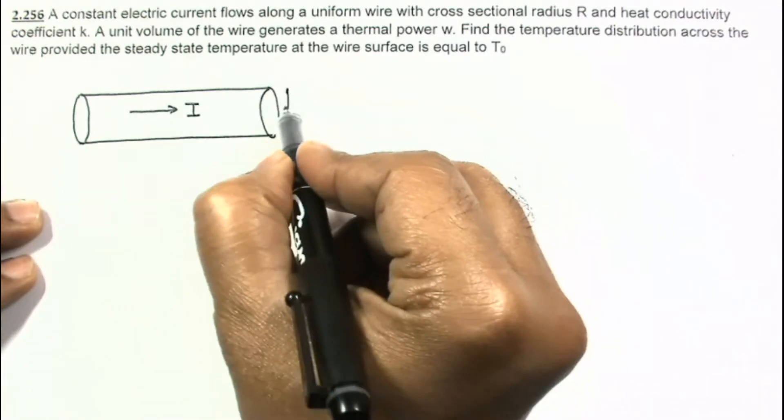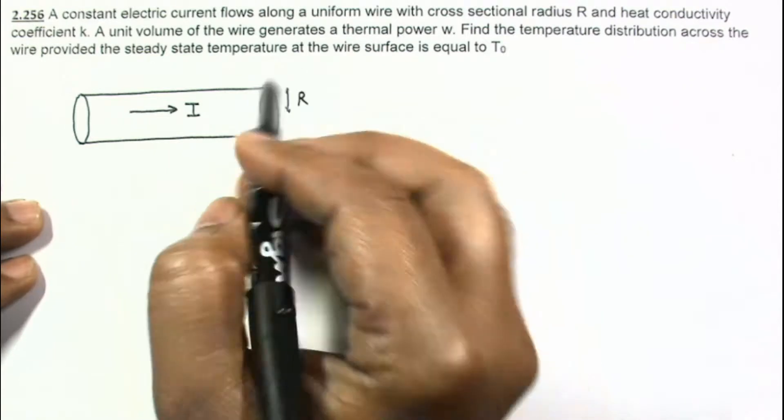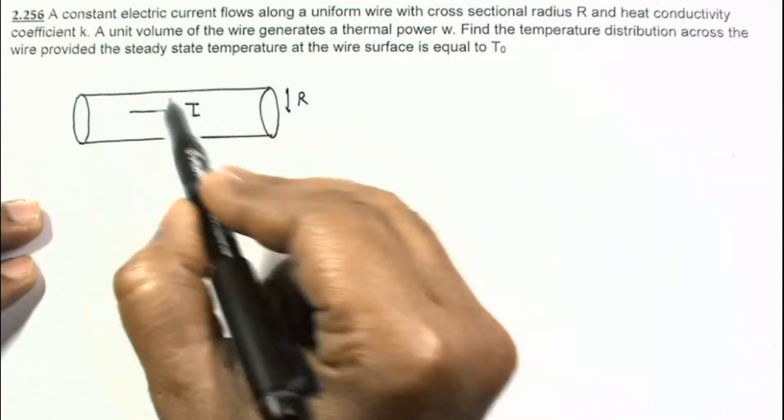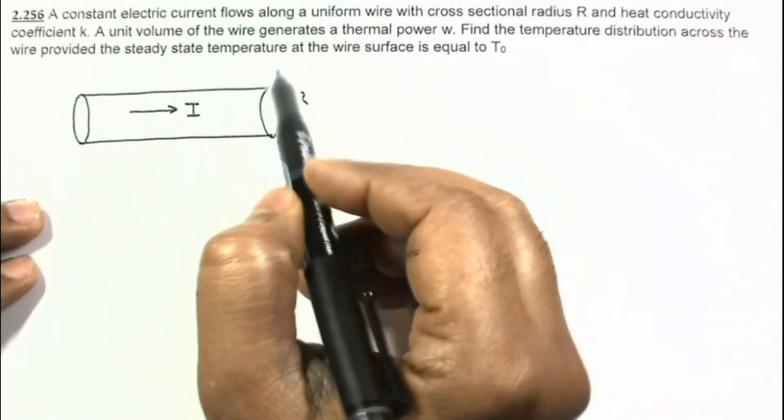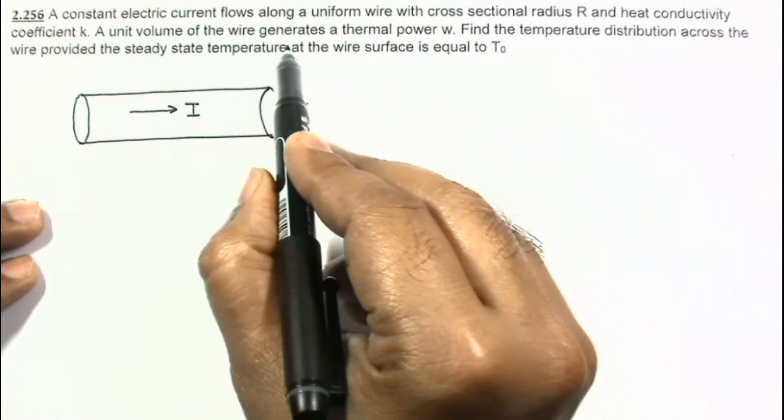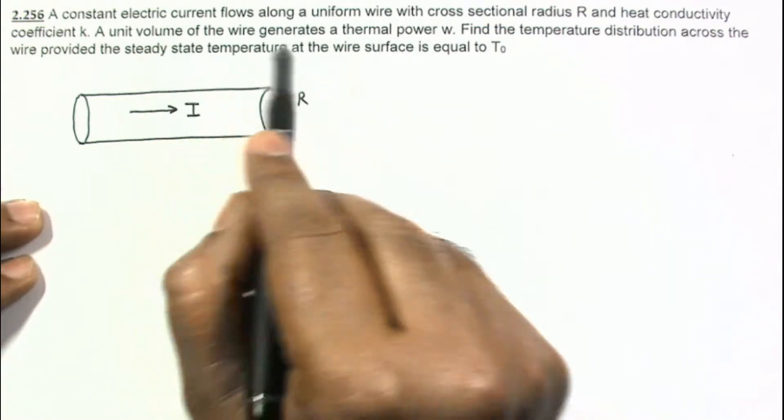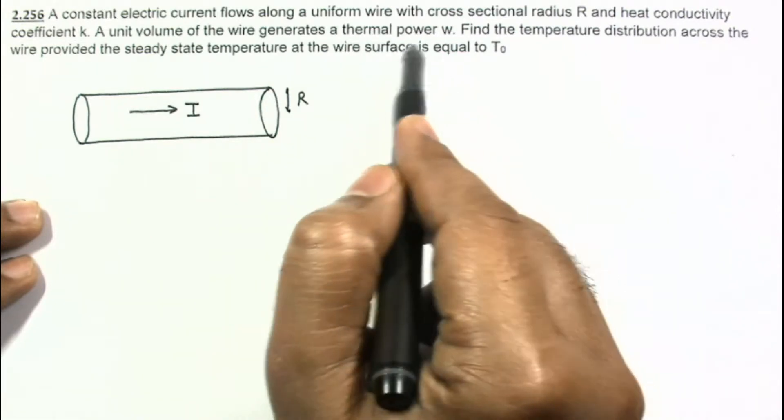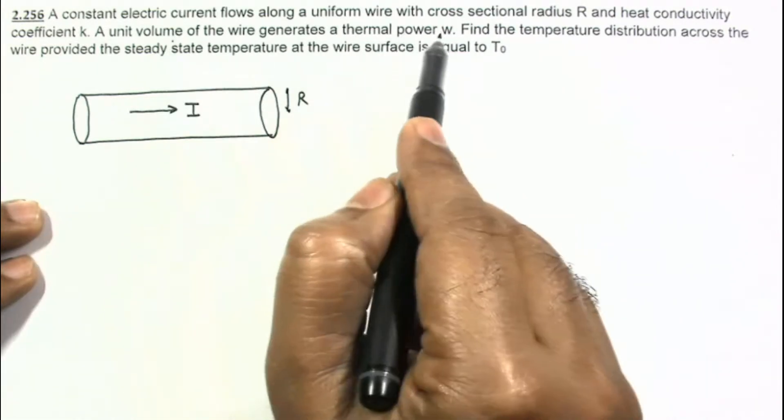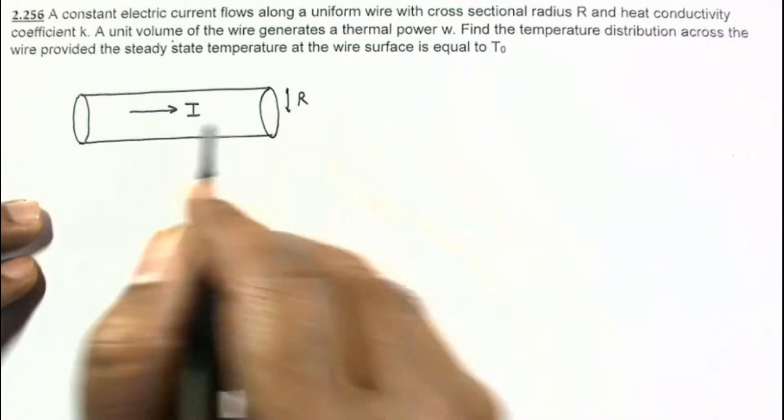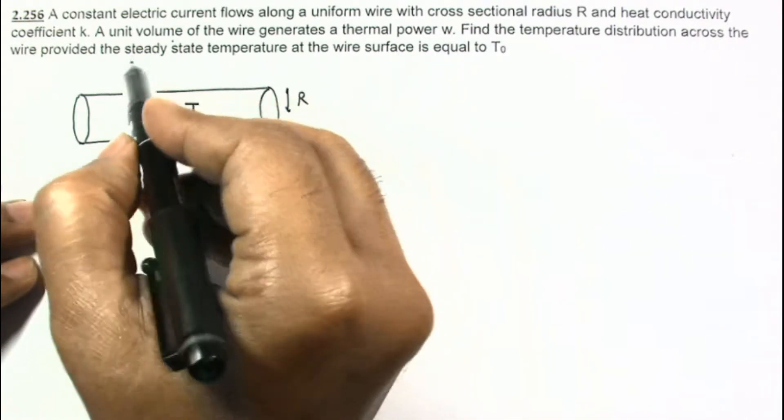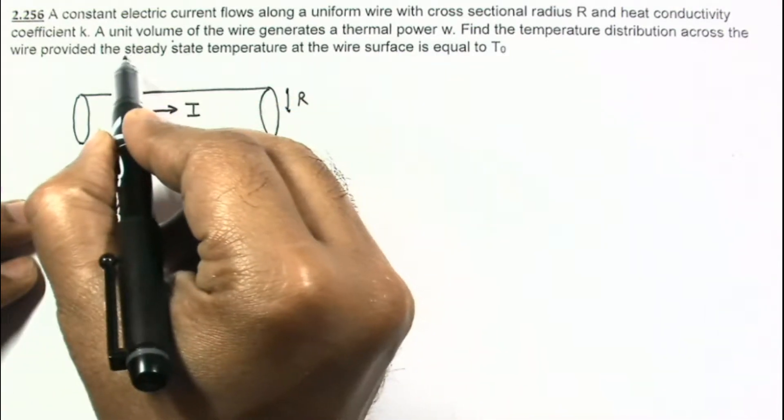Cross sectional radius is equal to R. And in this material, due to this current, heat is being generated. Unit volume of the wire generates a thermal power. So per unit time from unit volume, this much amount of heat is generated. And it is also given that the material is in steady state.